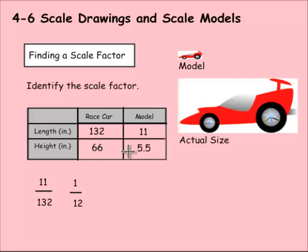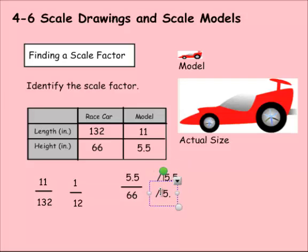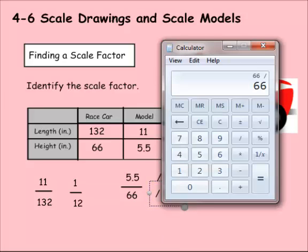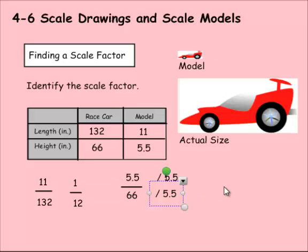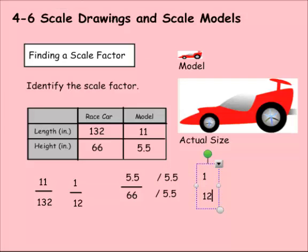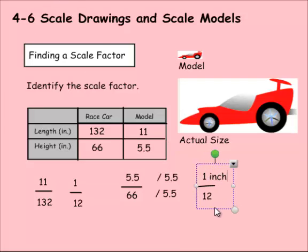Let's make sure it's the same scale for the height. The model is 5.5 and the actual height is 66. We can divide both of these by 5.5 to turn the top one into 1. 66 divided by 5.5 gives us 12, so this would be 1 and that would be 12. Our scale factor is 1 to 12 — that's 1 inch to 12 inches.